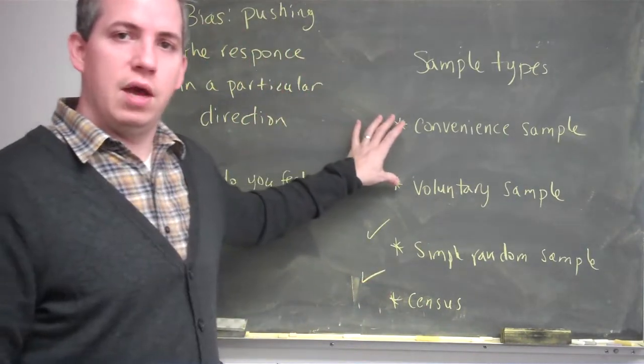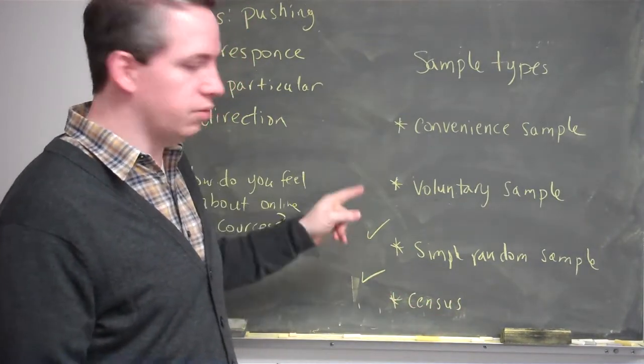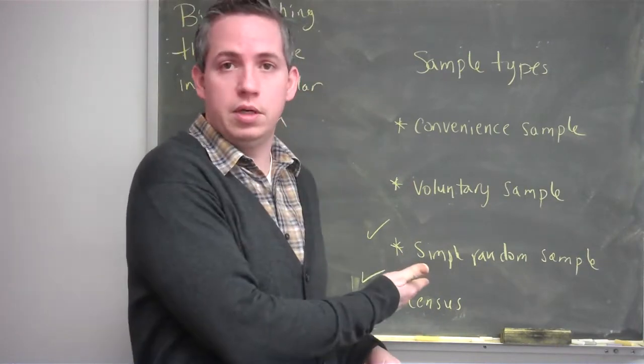So these two samples are pretty good, and these two samples are not when it comes to bias. Then you might ask, why the hell do we have them? The reason we still have convenience sample and voluntary sample is because sometimes it's just impossible to do a simple random sample.